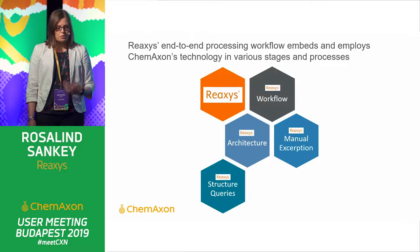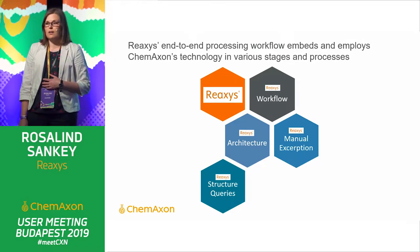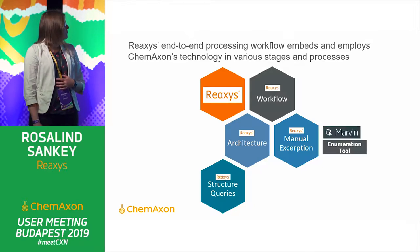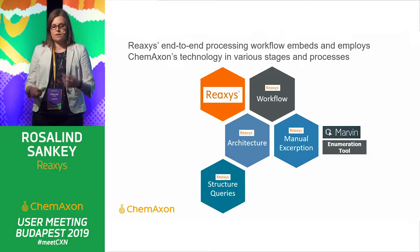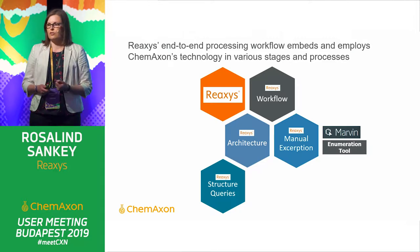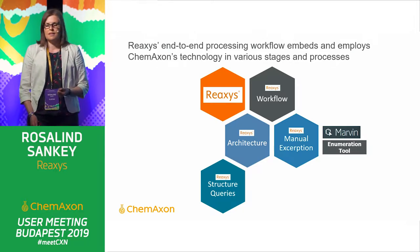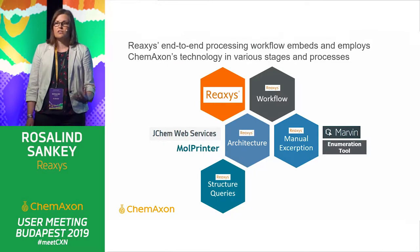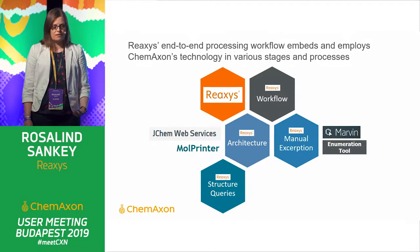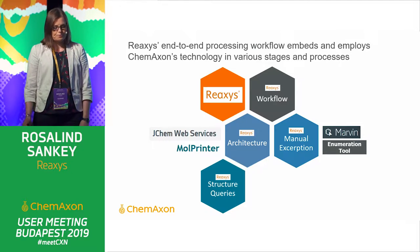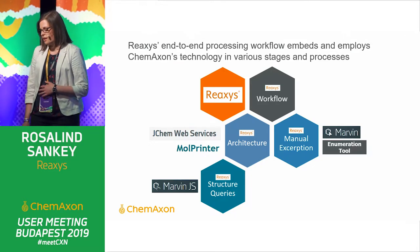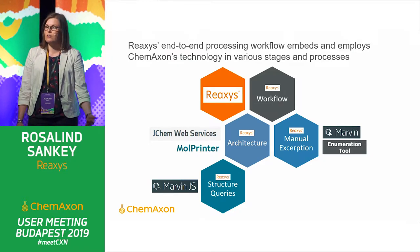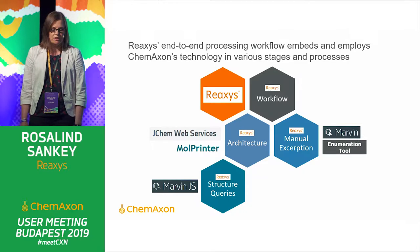Before I move on to those future projects, I want to discuss how we're already using ChemAxon technology within the Reaxis workflow end-to-end. When I talk about the workflow, I mean around manual extraction — when we look at patents and literature documents, the extraction of facts is currently predominantly done manually, and for this we use key ChemAxon technology. For the architecture — how we actually build and maintain the database — again, key components within ChemAxon technology. And front and centre, the web-based application that our users use: MarvinJS is one of the key structure editor inputs on the web application.